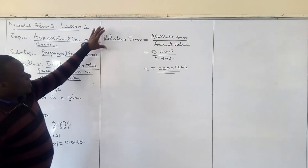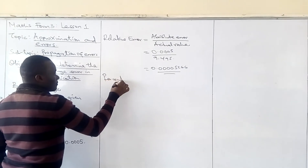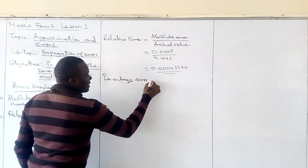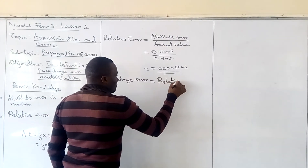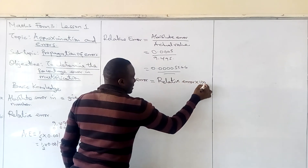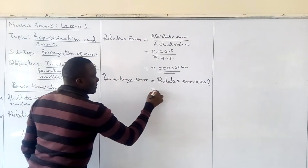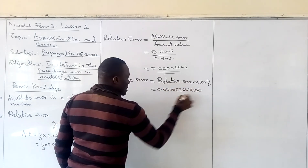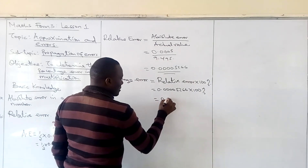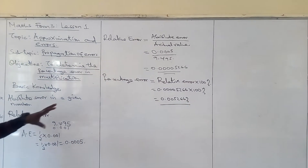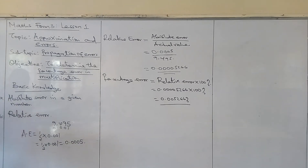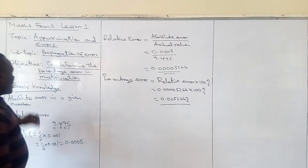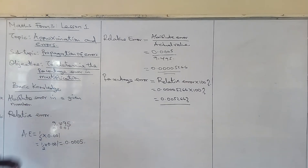Finally, once you have the relative error, how do we get the percentage error? Percentage error is relative error times 100 percent. So we take 0.0005266 and multiply by 100%, giving 0.05266%. Those are the prerequisites: finding absolute error, relative error, and percentage error. Now, our objective is determining the percentage error in multiplication.